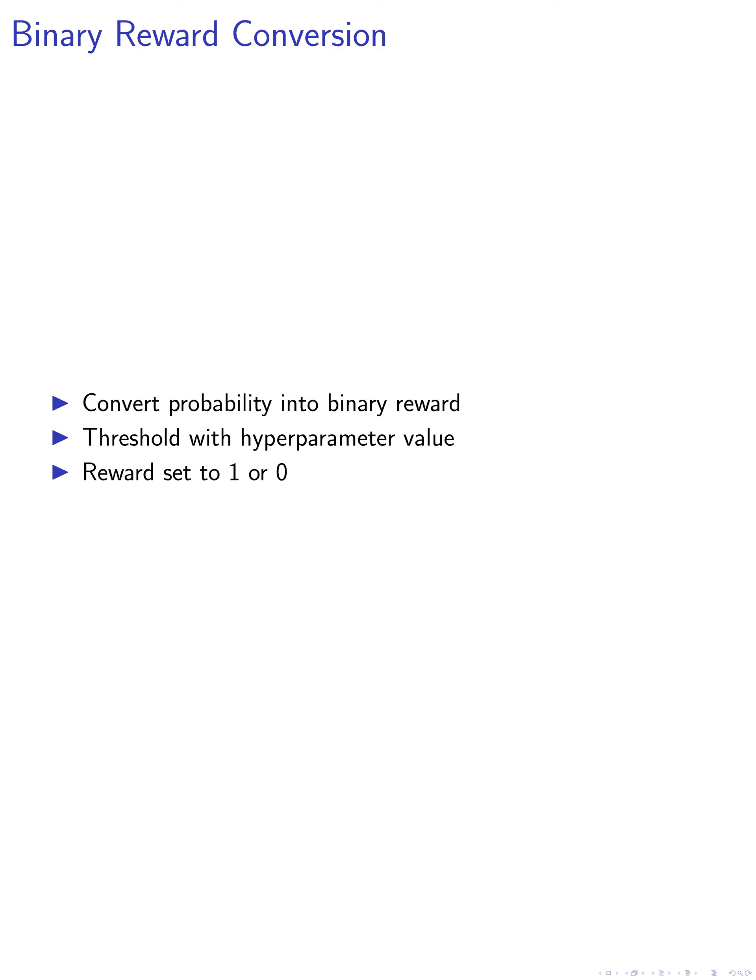Next, we convert the probability into a binary reward by comparing it to a hyperparameter threshold value. If the probability is greater than the threshold, the reward is set to 1, indicating that the goal has been achieved. Otherwise, the reward is set to 0.